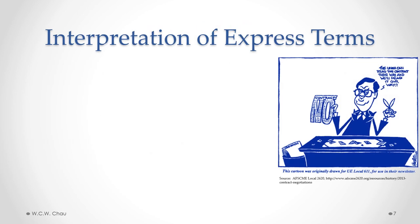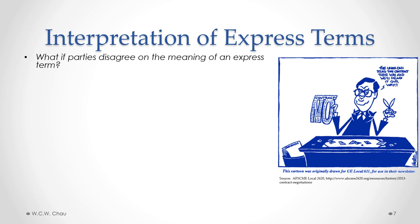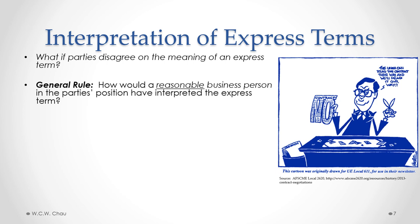Sometimes we need to interpret the meaning of express terms used in a contract. Express terms are contractual terms that are either actually stated verbally or put into writing. There are instances where a word, phrase, or sentence in a contract is written in a way that's not altogether clear, and the two parties have a dispute as to the proper interpretation of that term. We need some legal rules to help us determine the appropriate interpretation. The general rule that the courts apply is: how would a reasonable business person in the party's position have interpreted the express term? Whenever we use the word reasonable, it's not a very precise term, so we need more guidance to determine what is reasonable in a particular situation.